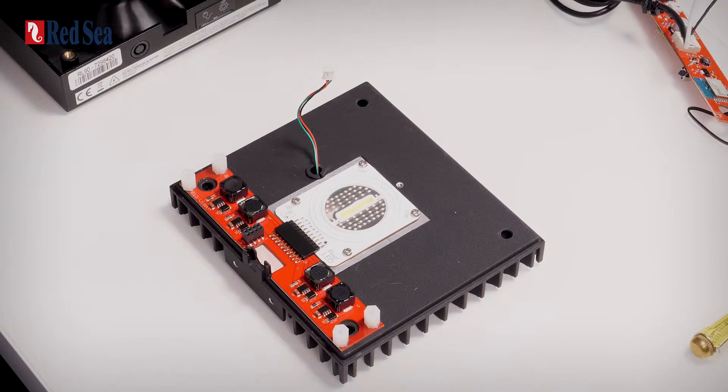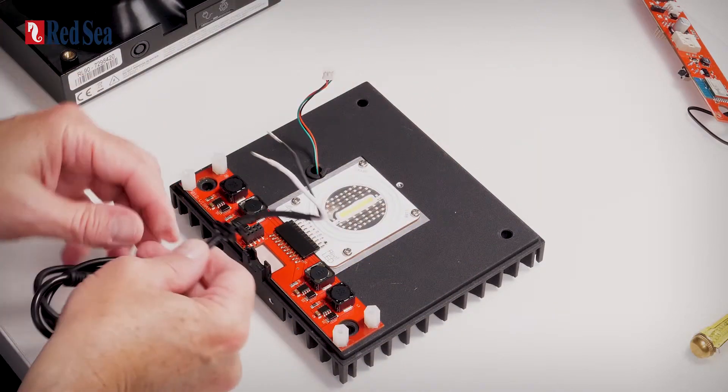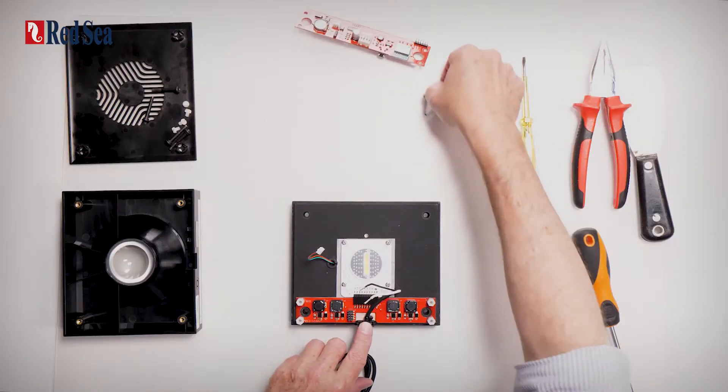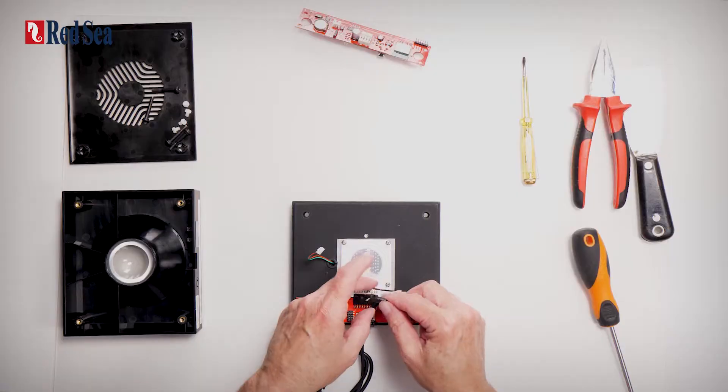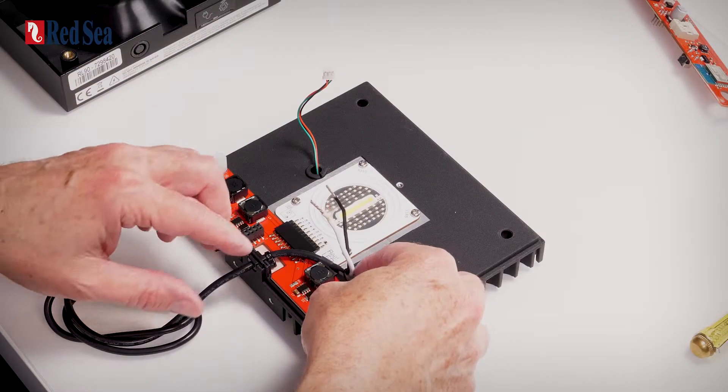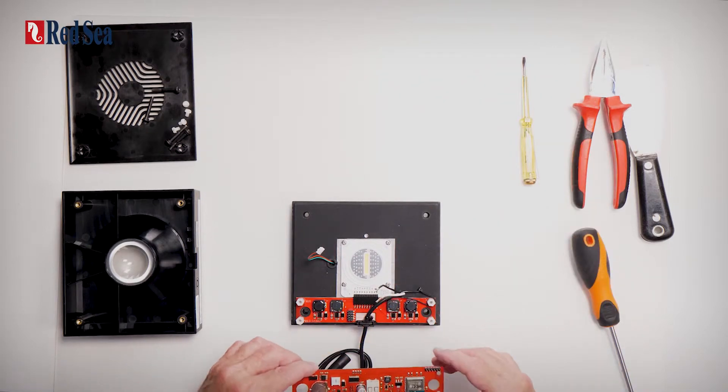When we've done that, we need to put our cable back in its position. And we can reuse this just to keep the cables on one side. And then we put our top board back.